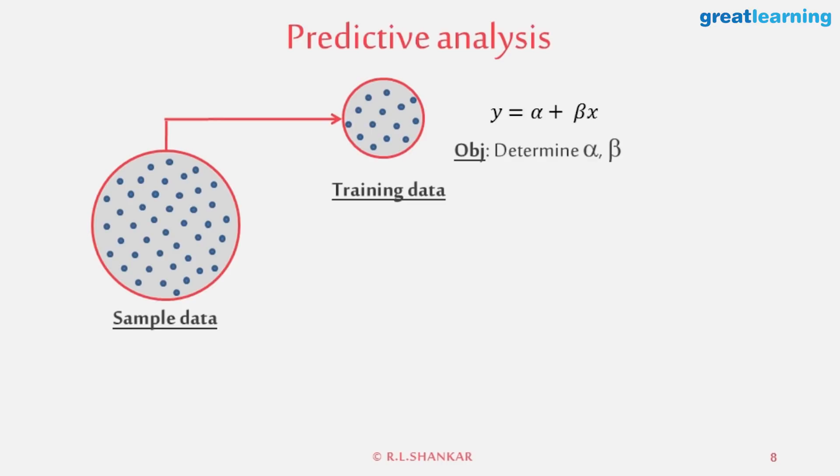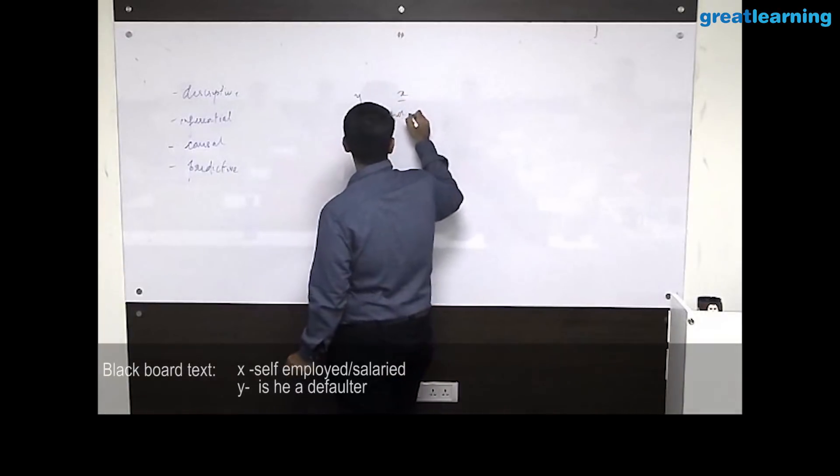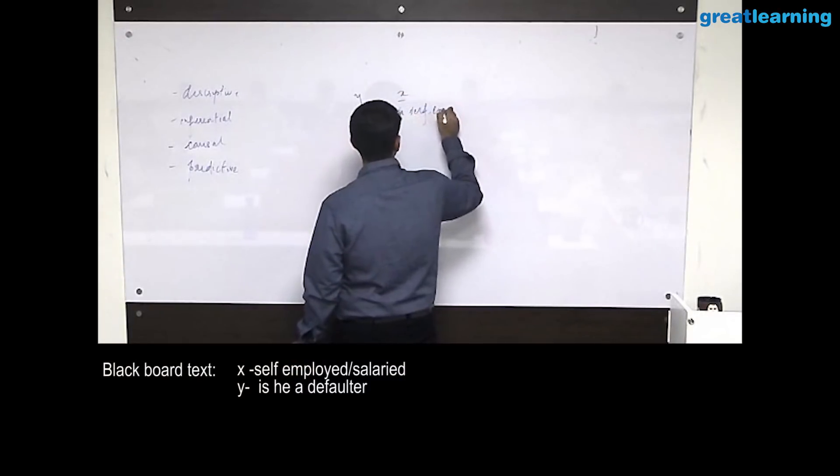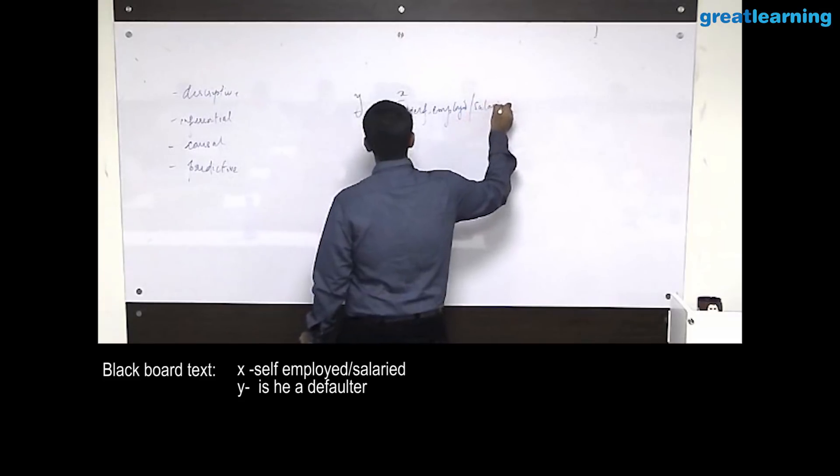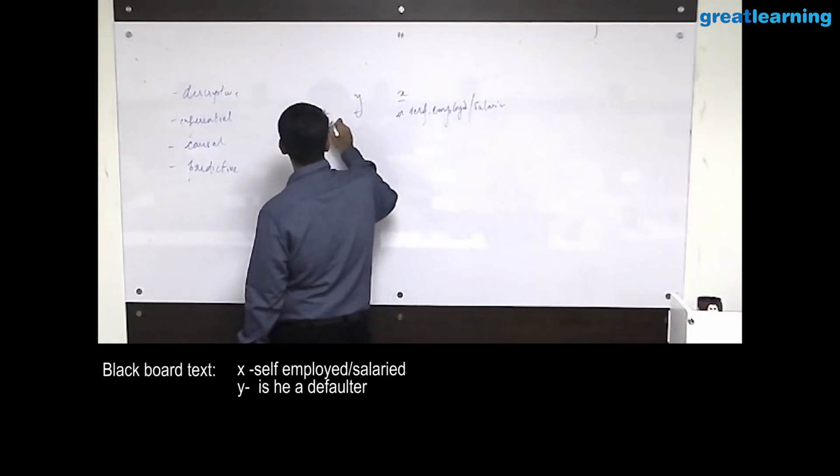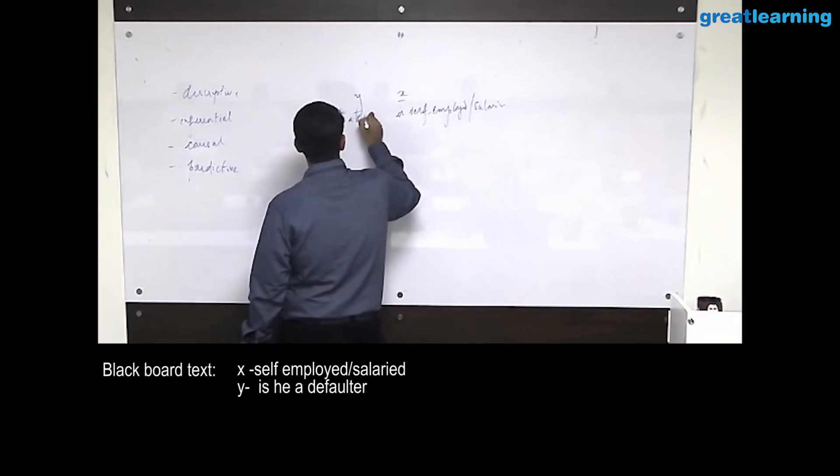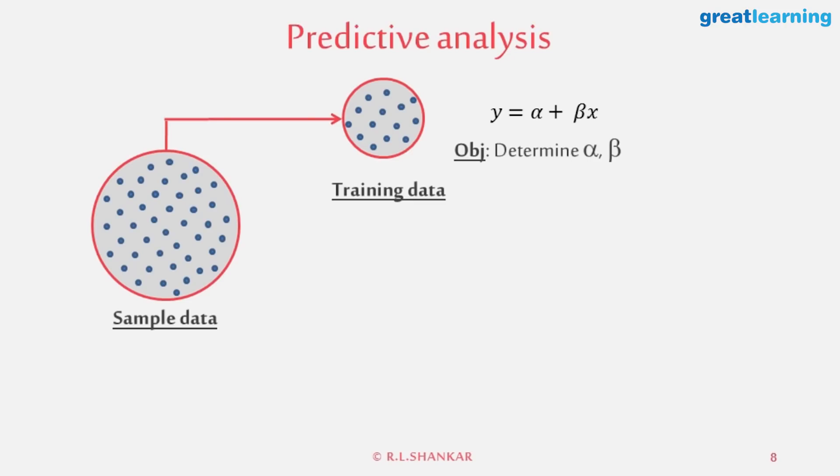It could be that I'm trying to say, what causes default in loans? I could see if the person is self-employed or has a salaried job. So my X could be: is a person self-employed or salaried? And my Y could be: is he a defaulter? I take a small set of data, and from that I try to establish a relationship.